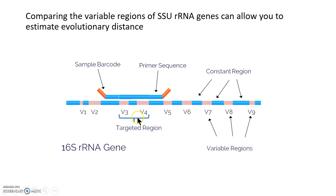In this case, the targeted regions would be variable region 3 and variable region 4. You would sequence this particular region of the 16S rRNA gene in all of the organisms you were interested in comparing, get those sequences, and then calculate how divergent those two sequences are from each other to create the phylogenetic tree.